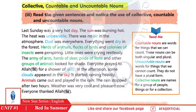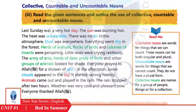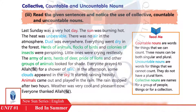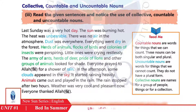Moving to the next portion — number three: collective, countable and uncountable nouns. Read the given sentences and notice their use. Countable nouns are those we can count, for example a marker, a pen. Uncountable nouns are those we cannot count.